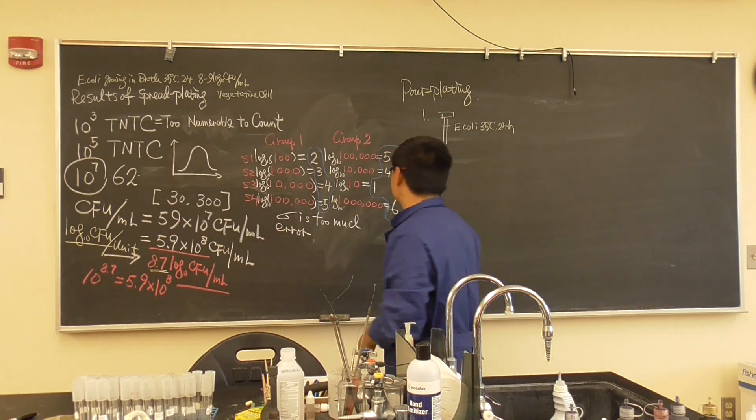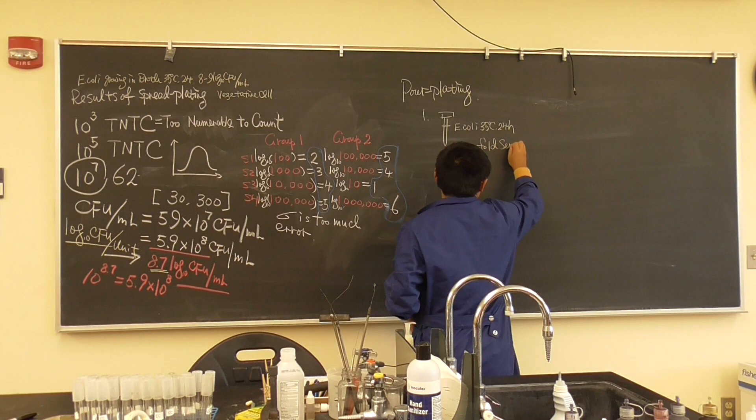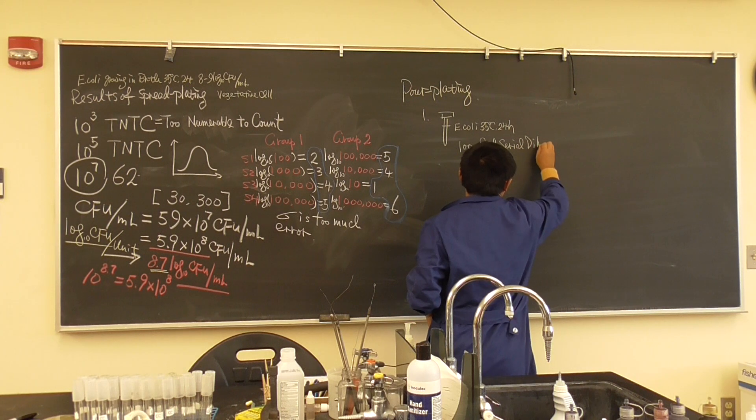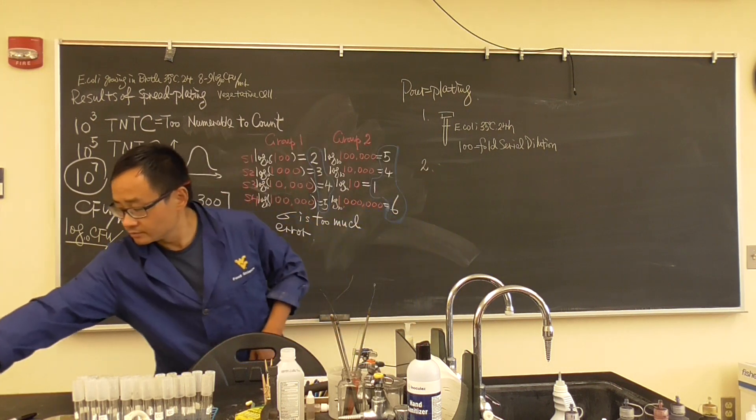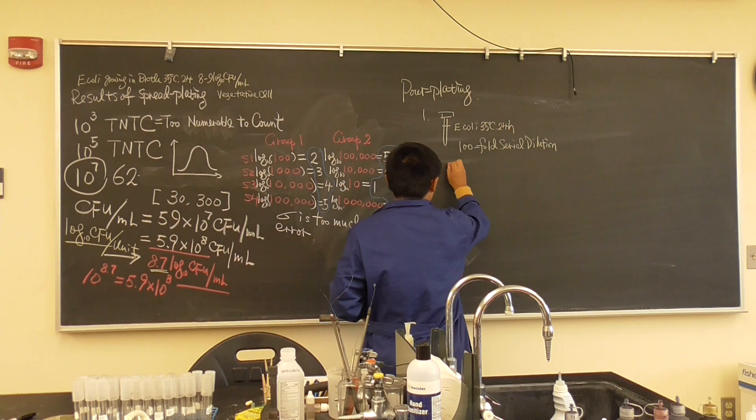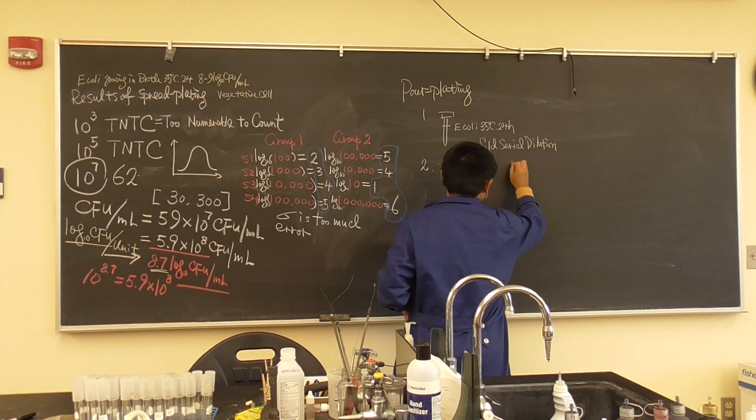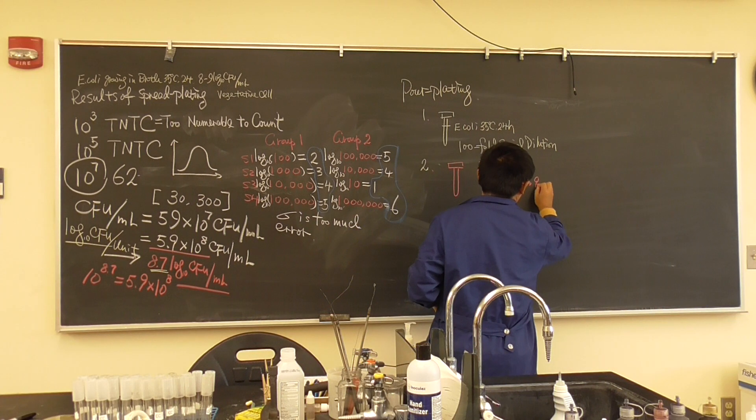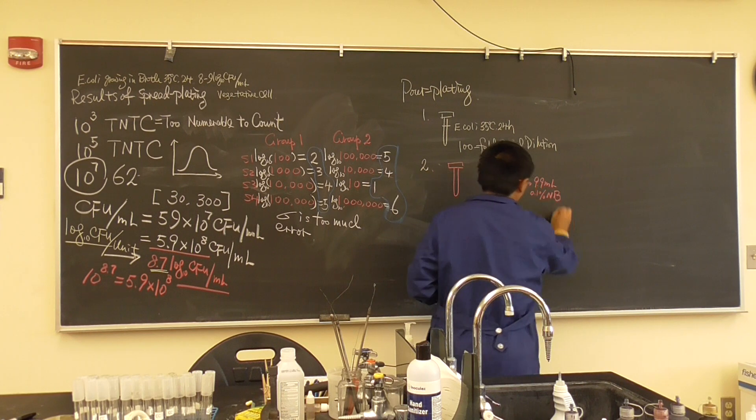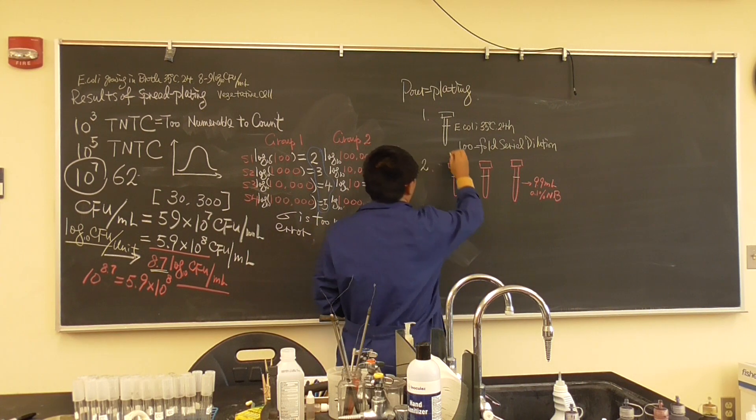First thing, what we do? Serial dilution. So let's do a hundred-fold serial dilution. Now how do you do? Do you remember? You need to grab three dilution tubes. These three dilution tubes, each containing 9.9 ml 0.1% nutrient broth.